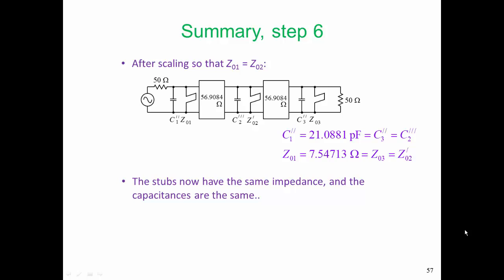In summary, this is our step six. We are simply scaling things so that Z01 is equal to Z02. So we're taking our central admittance element here, which is a hybrid resonator. We're scaling it appropriately so that the characteristic impedances of the three stubs are the same.